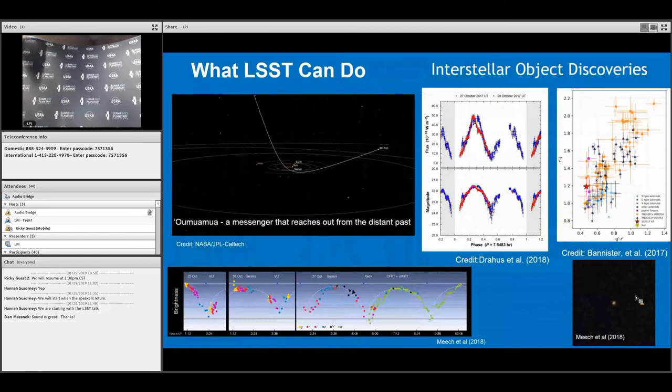For interstellar objects, I think everyone knows about Oumuamua and what was done with data sets from around the world using all ground-based and space-based observatories. The same thing can be done for any of the interstellar objects that LSST will discover.